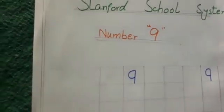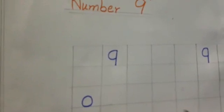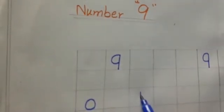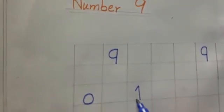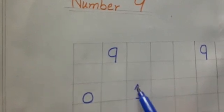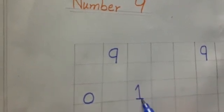Now I do practice here. Zero — make a circle, so this is zero. Zero means nothing. Number one — make a standing line, slanting line, sleeping line. This is number one.